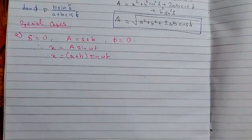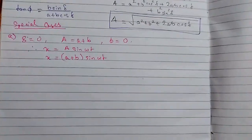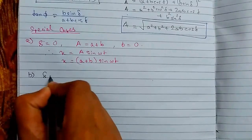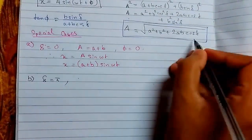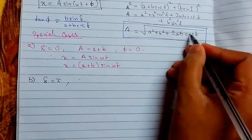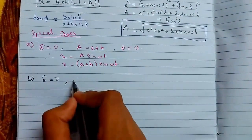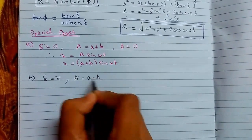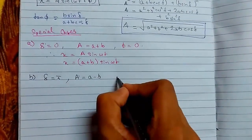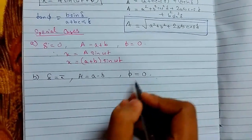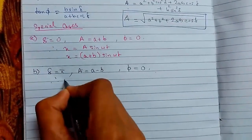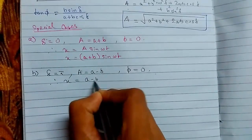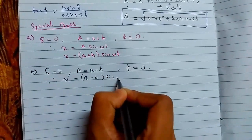Special case two: when δ equals π, we get minus 2ab, and A² equals (a − b)². So A equals (a − b) and φ equals 0. Therefore x equals (a − b) sin(ωt).